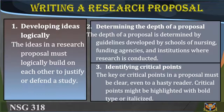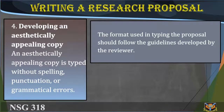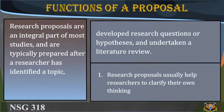The key or critical points in a proposal must be clear to the reader. Critical points might be highlighted with bold type or larger font size. Content considered critical in a proposal includes the background and significance of the research problem, method and research production plans, data collection and analysis plan, personnel, schedule, and budget. An aesthetically appealing copy is typed without spelling, punctuation, or grammatical errors, and the format should follow the guidelines developed by the reviewer.